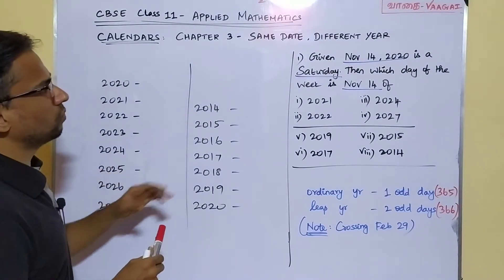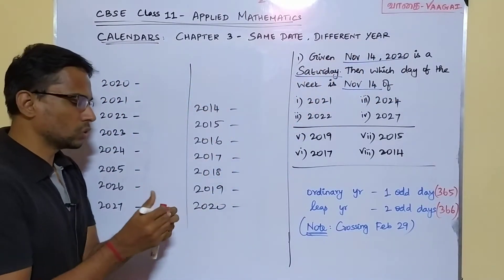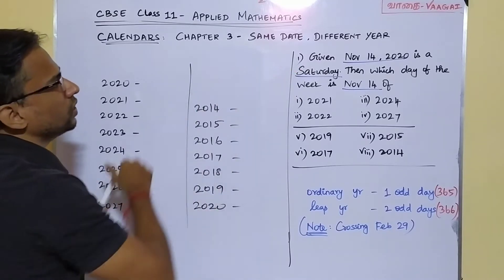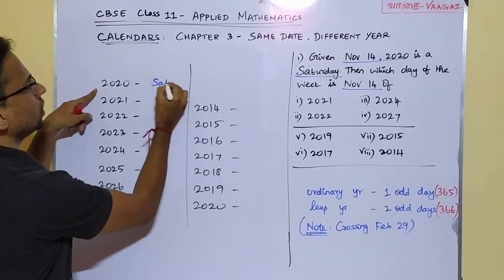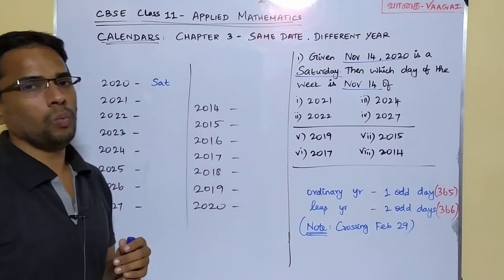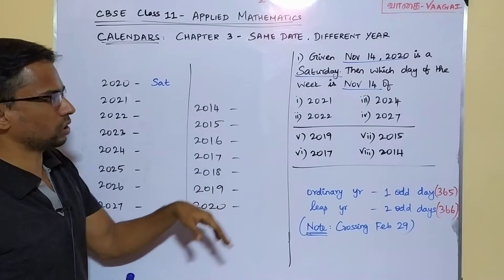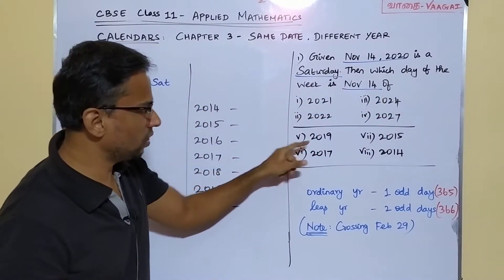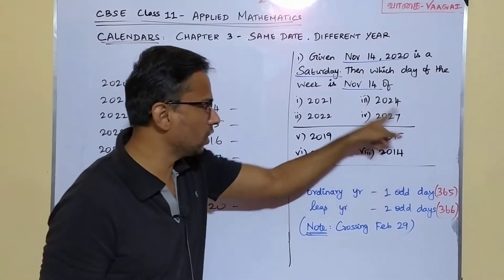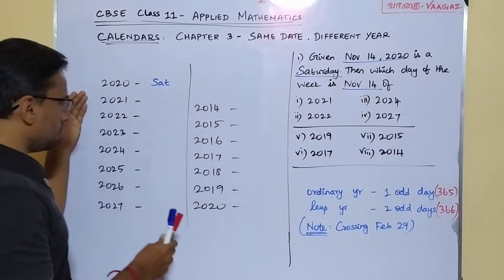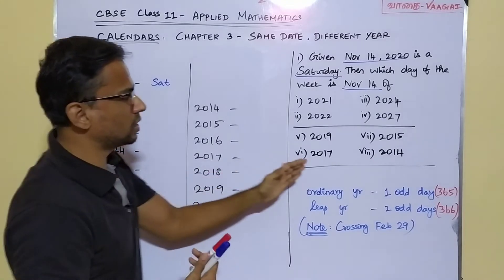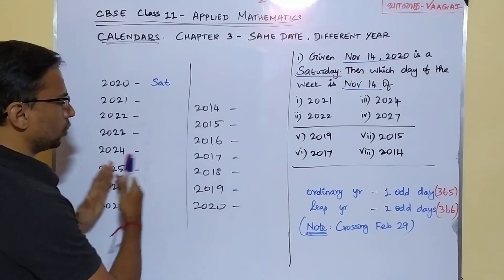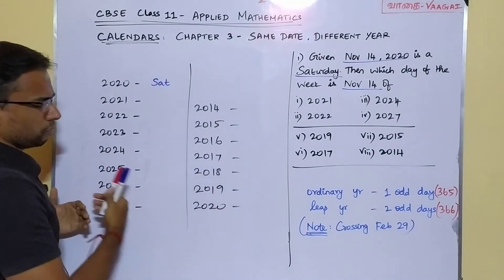We are given November 14 of 2020 is a Saturday. The date is not going to change — we have the same date for all questions, so I am just mentioning the years. We have Group 1 with future years: 2021, 2022, 2024, and 2027. Group 2 has past years: 2019, 2017, 2015, and 2014. I have listed Group 1 in ascending order and Group 2 in descending order. Importantly, here I will mark the leap years — 2020 and 2024 are leap years in Group 1, and 2020 and 2016 are leap years relevant to Group 2.